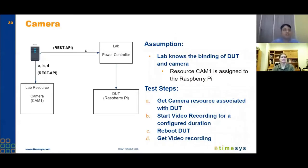Next is our lab-independent camera test. This test records video of a device while it reboots. In the lab, the device under test is associated with two lab resources: a camera resource and a power controller resource. The lab knows the binding of these resources. The camera resource takes video of the device, while the power controller is responsible for rebooting the board.